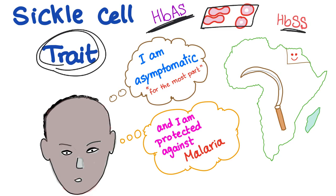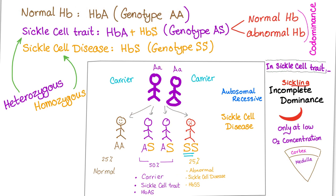In sickle cell anemia, the cells are sickled. In sickle cell trait, they are normal for the most part — they can sickle only under extreme conditions. Normal hemoglobin is hemoglobin A, and the genotype is AA.